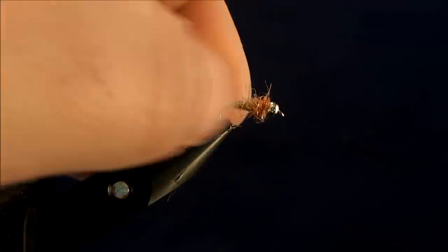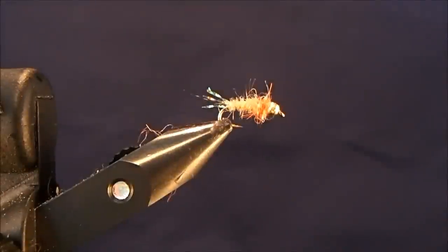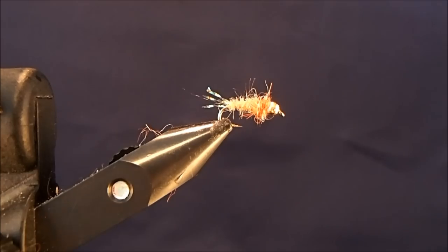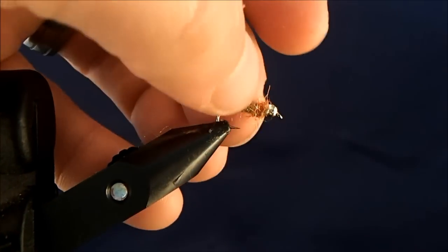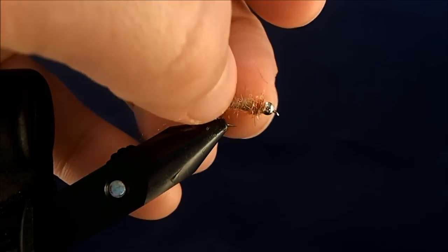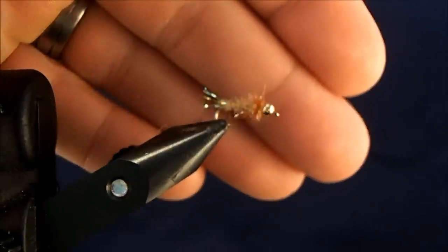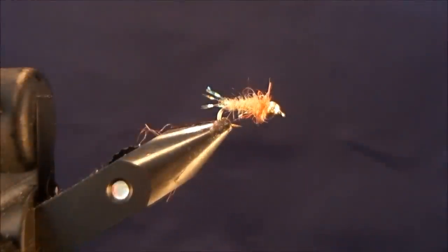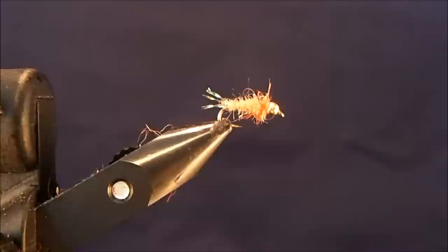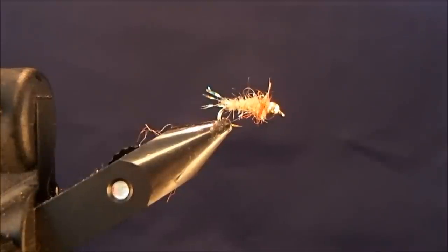Very effective. You can tie this in all sorts of different colors. This one with the golden stone and that rusty orange is by far my most productive. So great little fly. Again, that's my version of pink squirrel. So that's Hammer Creek's pink squirrel variation.